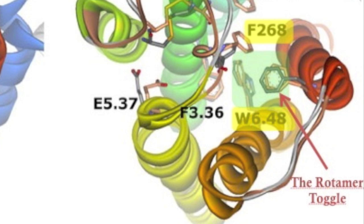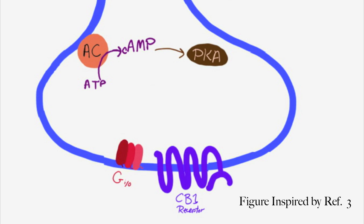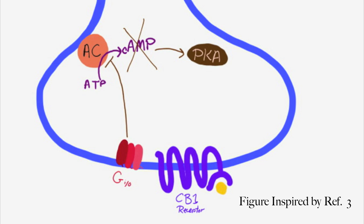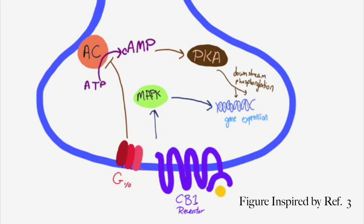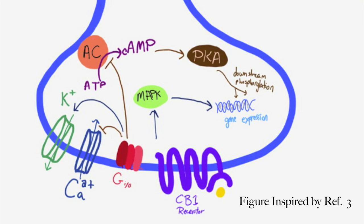We can now take a look at an abbreviated version of the pathway signaled by cannabinoid ligands. Activation of the receptor motivates inhibitory G proteins to inhibit adenylate cyclases, and therefore cease production of cyclic AMP, a second messenger. This corresponds with the inactivation of PKA and its phosphorylation pathway. Inhibitory G proteins can also stimulate mitogen-activated protein kinases, which alter gene expression among other things. This stimulation is also coupled with the inhibition of calcium channels and the activation of inward rectifier potassium channels, which increases the synaptic ionic gradient and depresses neurotransmitter release.